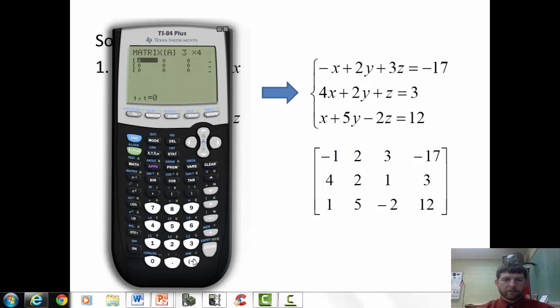And you can see they've set up our matrix for us. We just need to type in. So I'm going to type negative 1, enter. 2, enter. 3, enter. Negative 17. I have an error. That should be 3. That should be 2. And we'll double check all this before we go on further. 4, 2, 1, enter. 3, enter. 1, enter. 5, enter. Negative 2, enter. 12, enter.